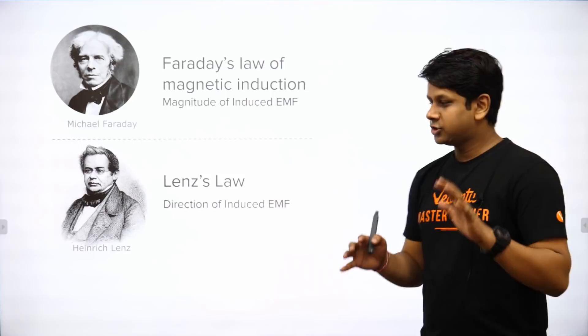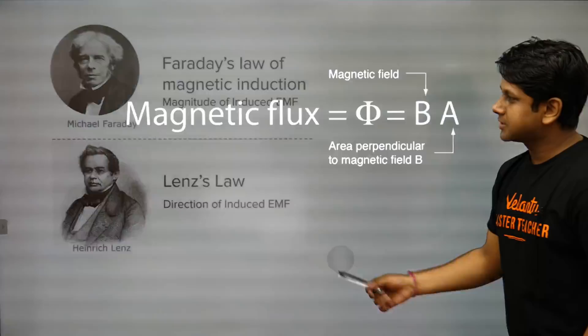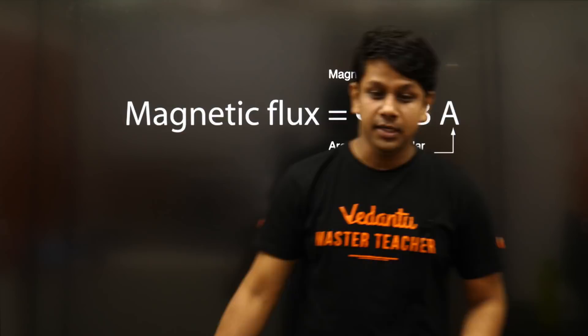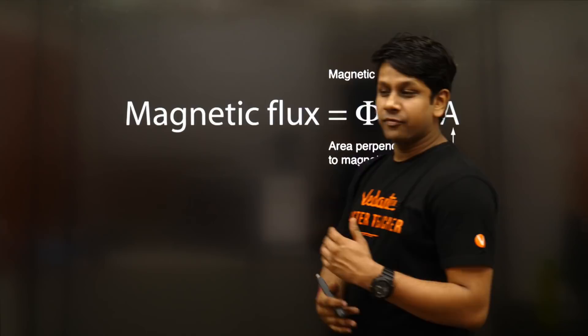There are two laws: Faraday's Law and Lenz's Law. Today we will see both. First, the important concept is Magnetic Flux. Magnetic Flux is the magnetic field dot area vector — B dot A.